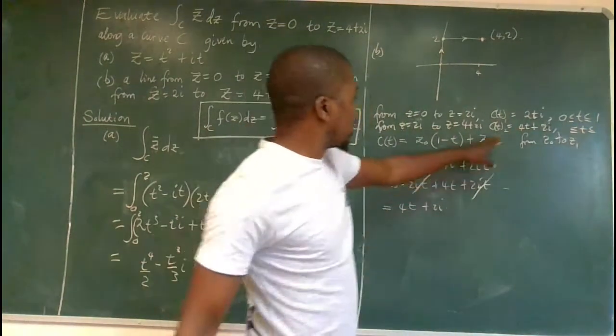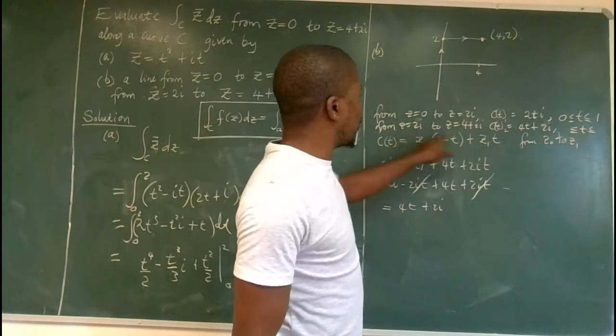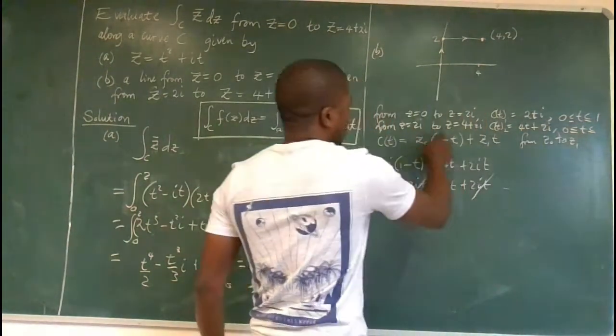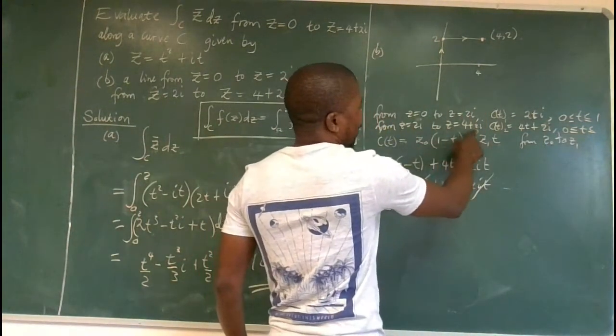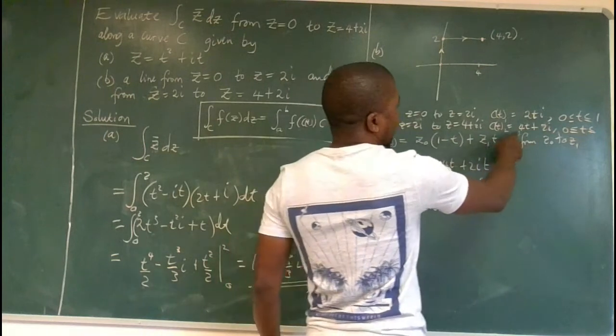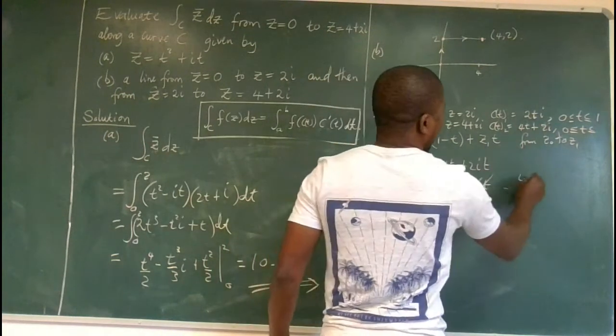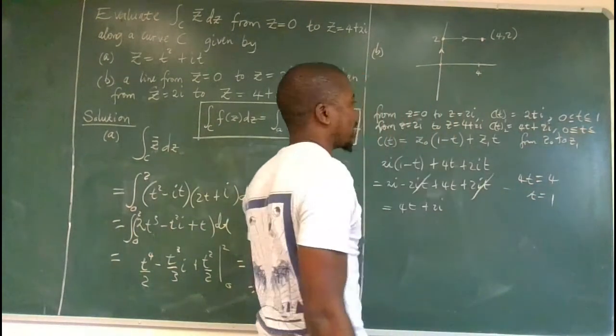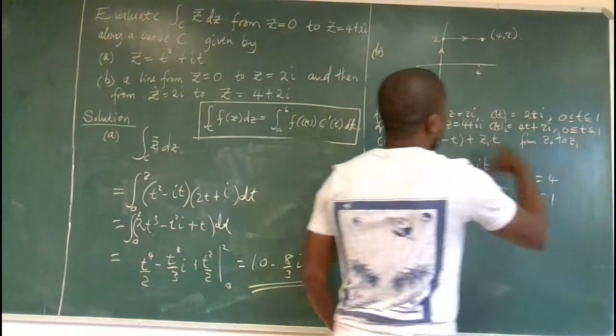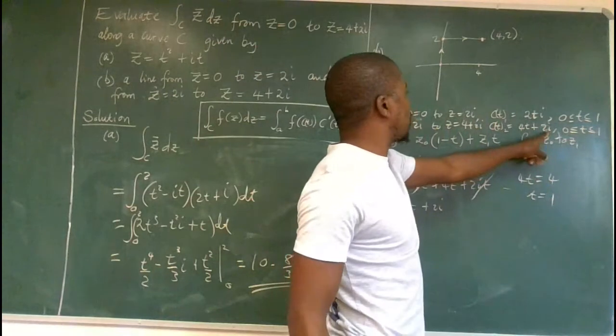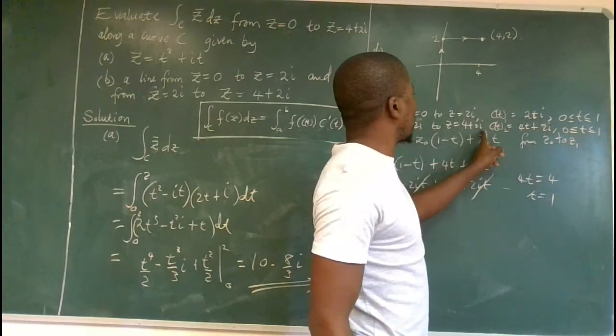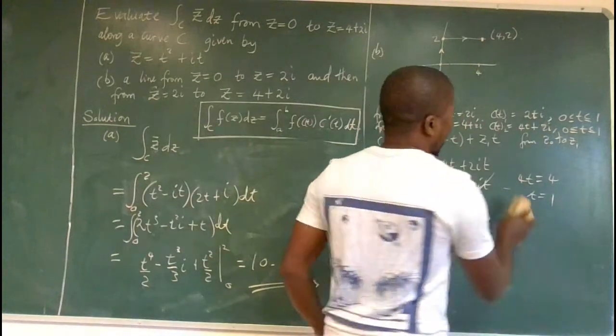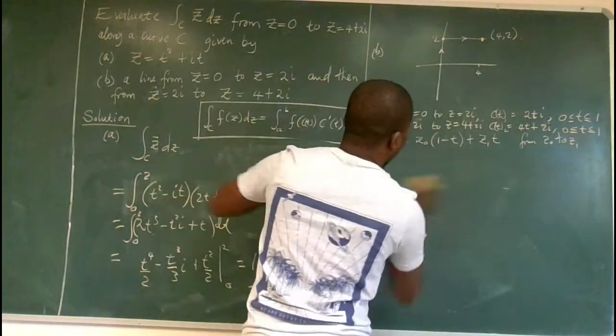So when this left-hand side is equal to 2i, it means t is 0. And when the right-hand side is equal to 4 plus 2i, you can equate 4t, 4t will be equal to 4, so t is equal to 1, using the real part only. You can check using the imaginary part as well, 2i will be equal to 2i. So there's no t there, so we can only use the real part. So we don't need this.